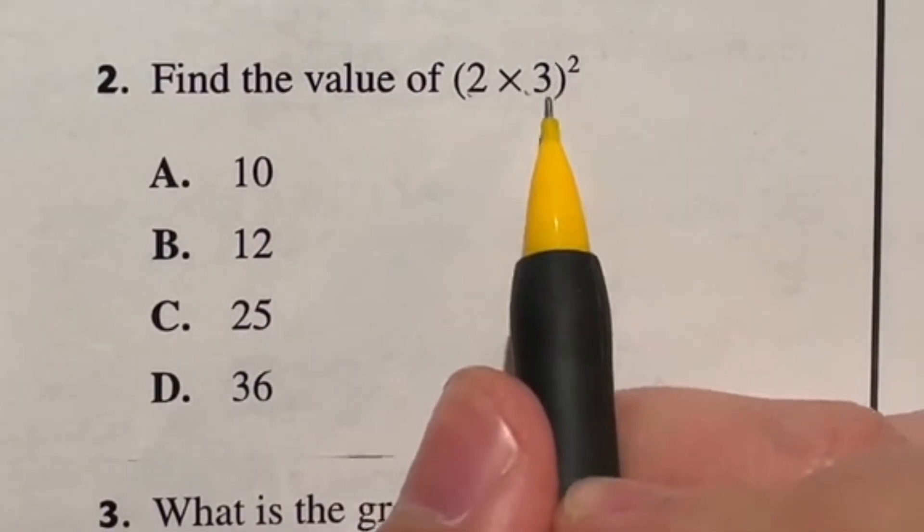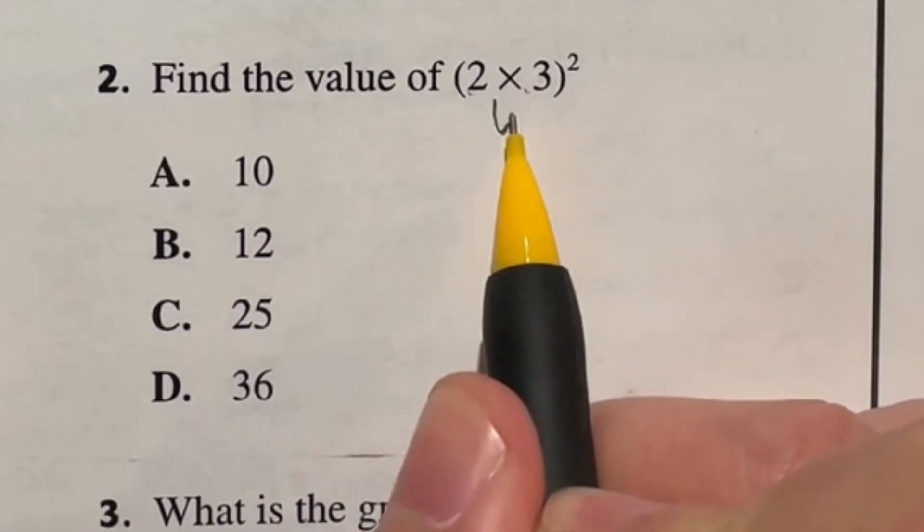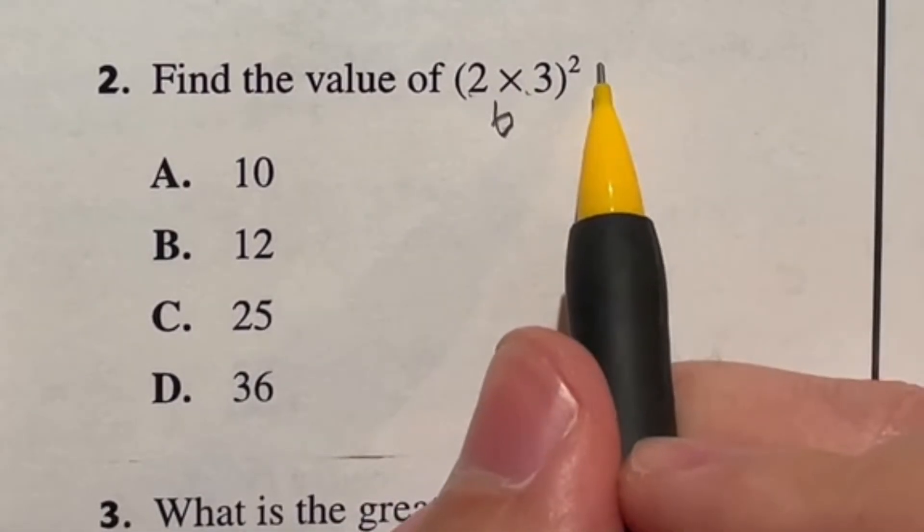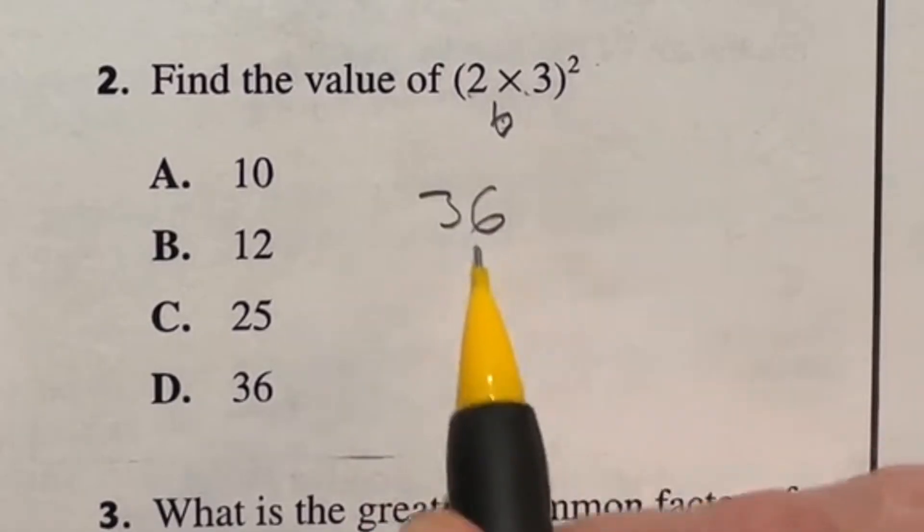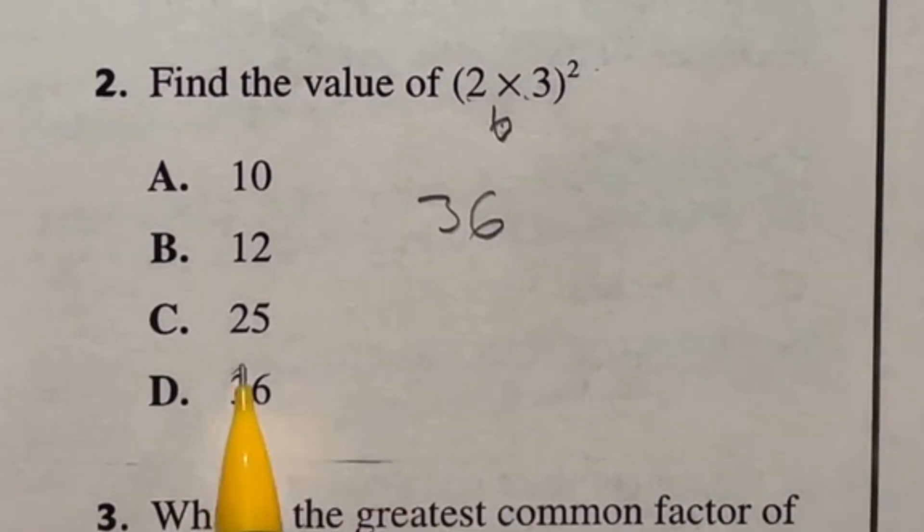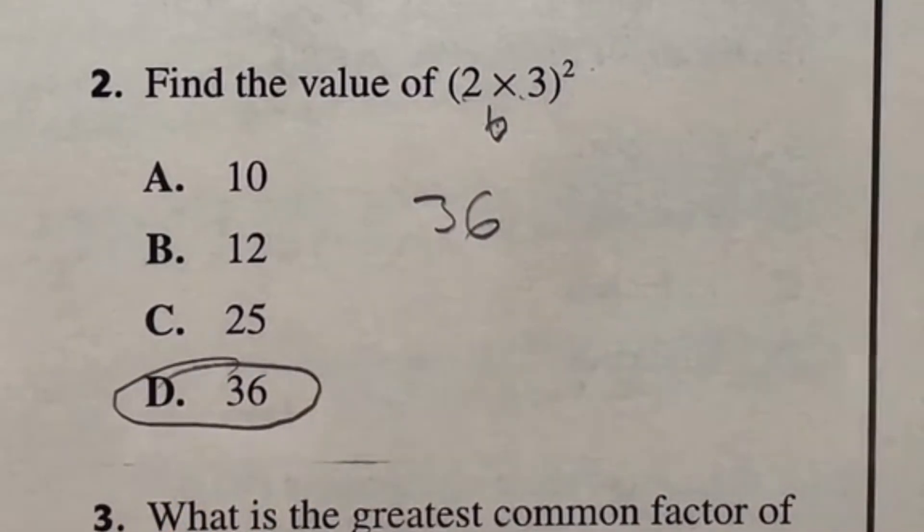Round two for this guy right here. Let's do this multiplication first because it's in parentheses. So two times three is going to give me a six and six squared, six times six is going to give me 36. So on this one, we're looking at answer D.